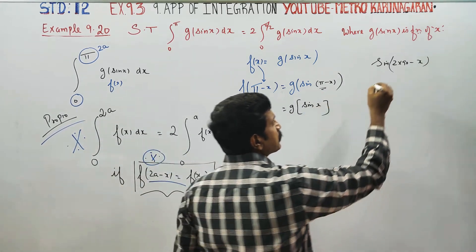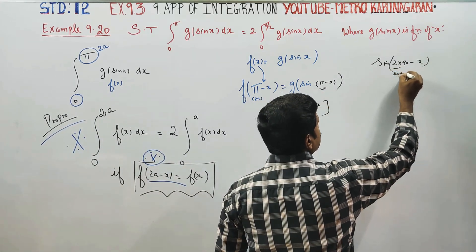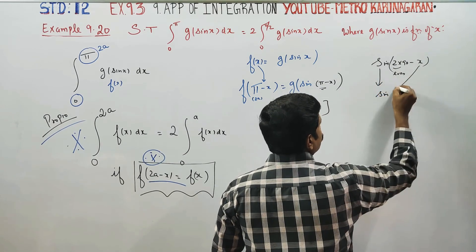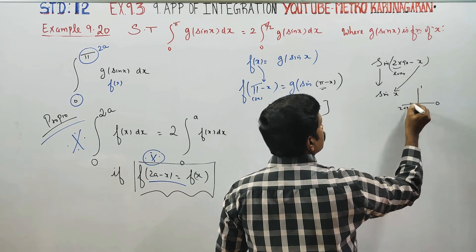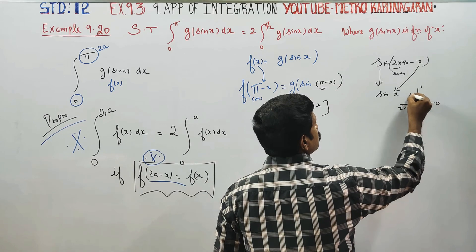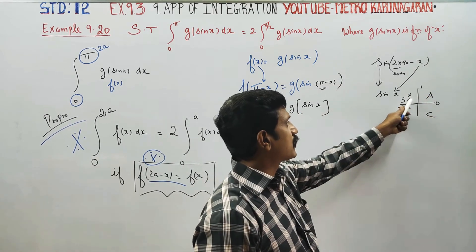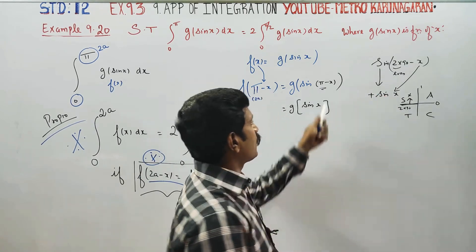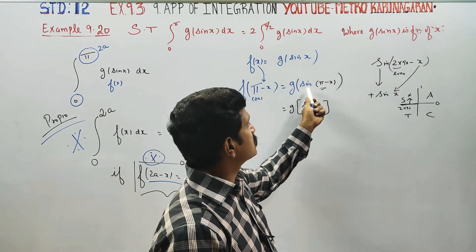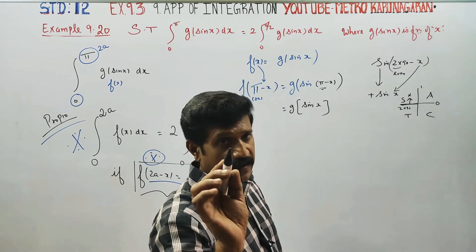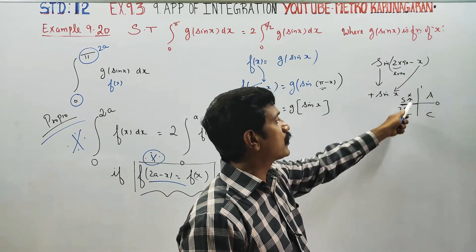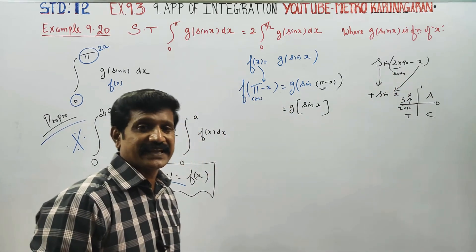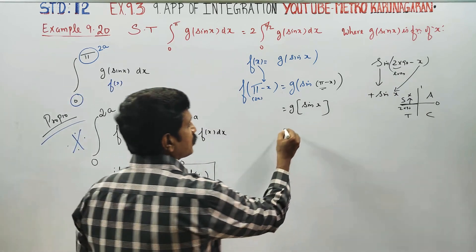Now, sin(180 minus x): since 180 is 2 times 90, an even multiple of 90, we check the quadrant. Using the memory aid — All Silver Tea Cups, All Students Take Centum — the second quadrant is positive. The direct form: sin(180 minus theta) equals sin theta. So sin(pi minus x) equals positive sin x.